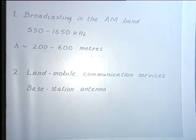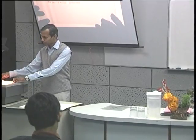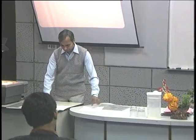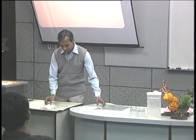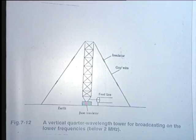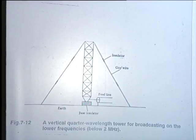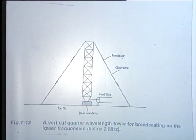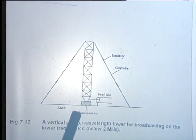Before we consider the quantitative expressions for the monopole, let me show you how in these practical applications the antenna may look like. For AM broadcast, the antenna is going to take the shape of a tower. The wavelengths are of the order of hundreds of meters, so even if this tower is a quarter wavelength, it is going to be a considerably large structure and will have to be in the form of a big tower made out of trusses.